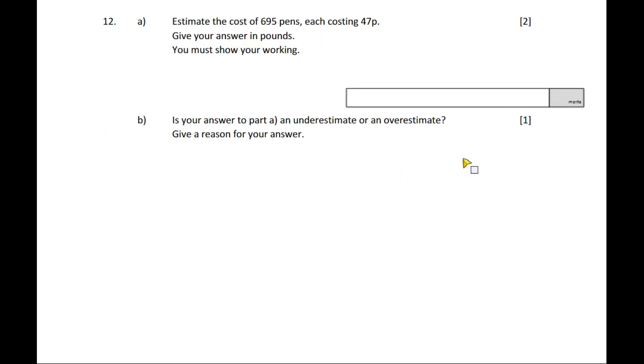Question 12, part A: Estimate the cost of 695 pens at 47 pence each. We're going to estimate: 695 rounds to 700, and 47 rounds to 50. Seven times five is 35, put the three zeros back on to get 35,000 pence. To convert to pounds, divide by 100 by moving the decimal point two places back. The answer is £350.